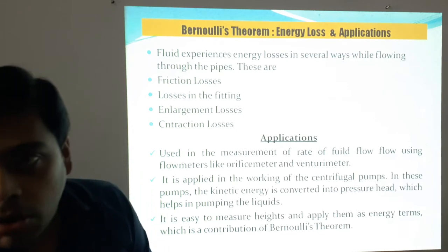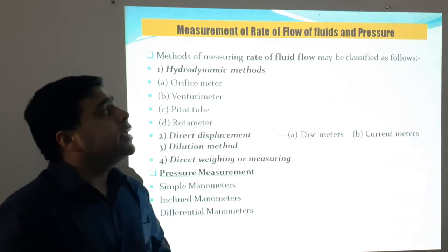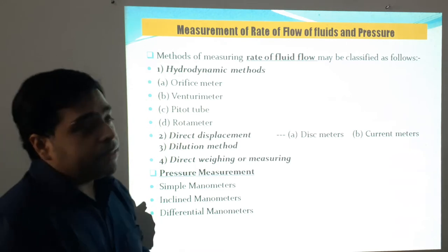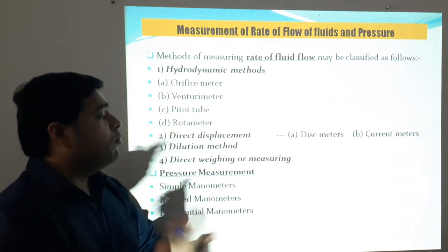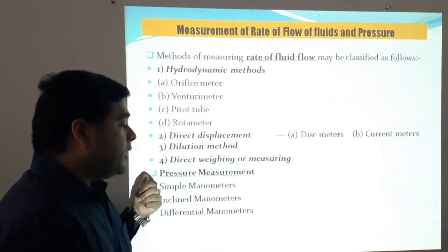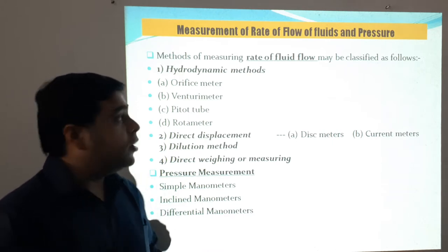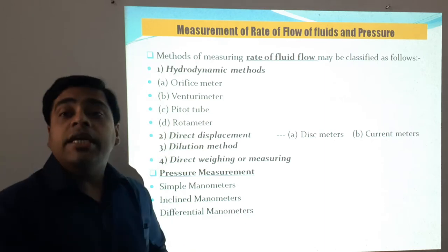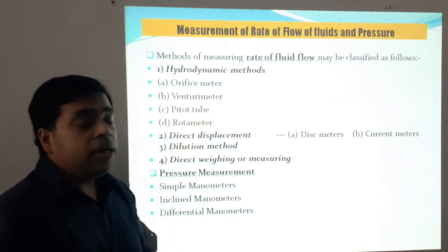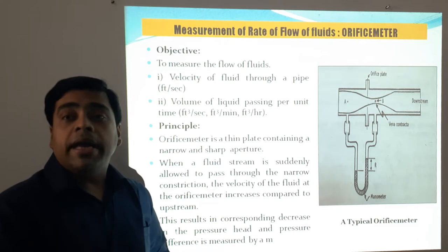Now we will start with the methods of measuring the rate of fluid flow. These can be classified into two basic categories: hydrodynamic methods, the direct displacement method, the dilution method, and the direct weighing or measuring method. Pressure measurement can be done using simple manometers, inclined manometers, and differential manometers. Hydrodynamic methods include orifice meter, venturimeter, pitot tube, and rotameter. Today we start with the orifice meter.